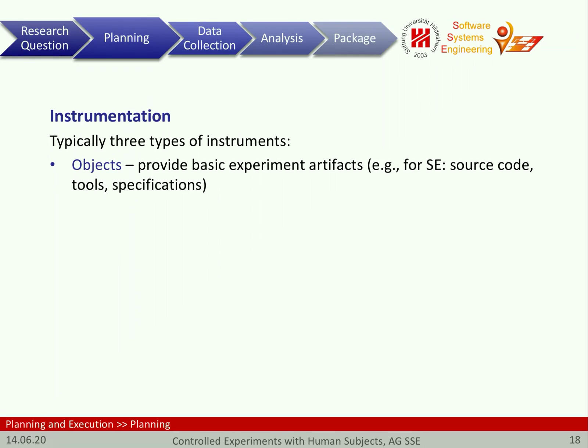The next step is so-called instrumentation. We typically differentiate three different types. The first are objects — basic experimental artifacts needed to execute the experiment. The specific character of these artifacts depends on the kind of experiment. For software engineering, this could be source code, tools, or specifications; for business processes, it might be orders or bills. These artifacts need to be specifically created and designed to support the experiment.